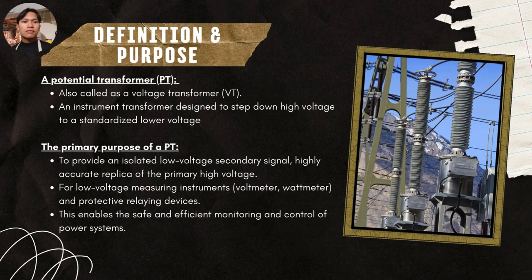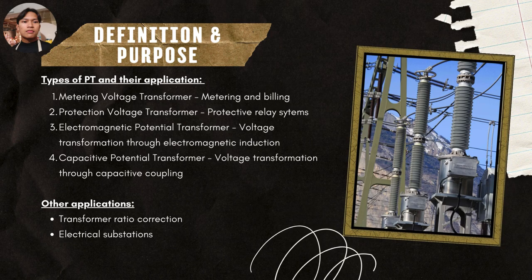Now moving on to the last transformer — the potential transformer, also known as the voltage transformer. It is an instrument transformer designed to step down high voltage to a standardized lower voltage. Its primary purpose is to provide an isolated low voltage secondary signal which is a highly accurate replica of the primary high voltage, for use with low voltage measuring instruments such as voltmeters and wattmeters, and protective relaying devices. Applications include metering and billing, protective relay systems, voltage transformation through electromagnetic induction or capacitive coupling, transformer ratio correction, and electrical substations.